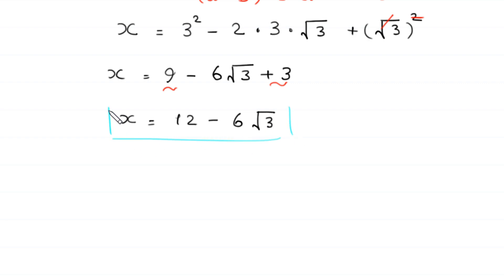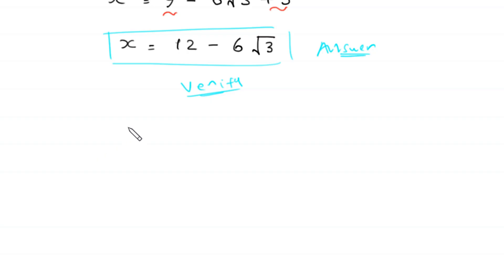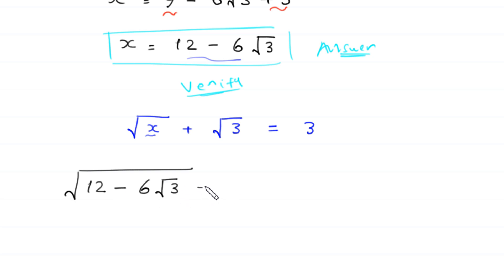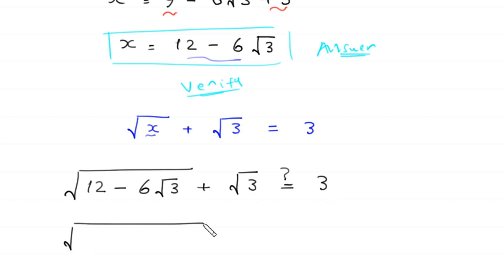Now let's verify this value of x. We substitute x equals 12 minus 6 times root 3 back into the original equation: square root of (12 minus 6 times root 3) plus root 3 — is it equal to 3?